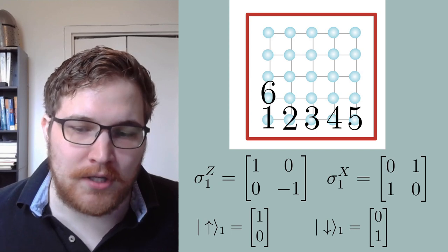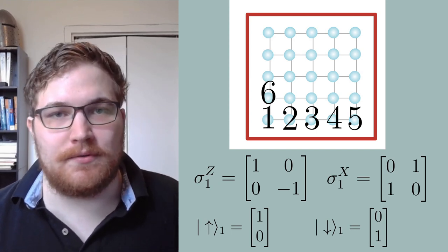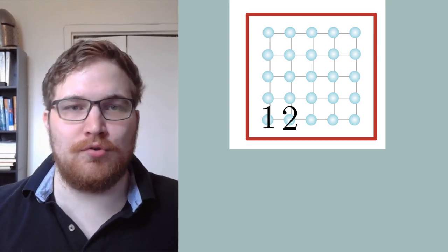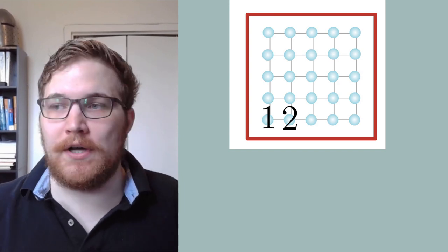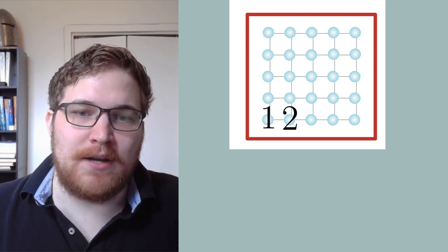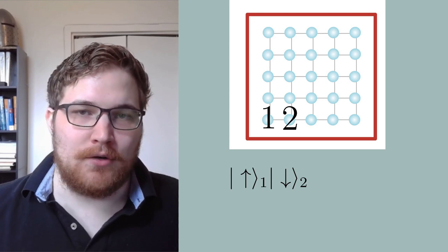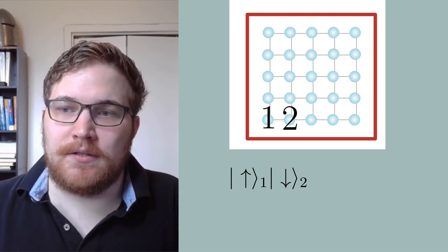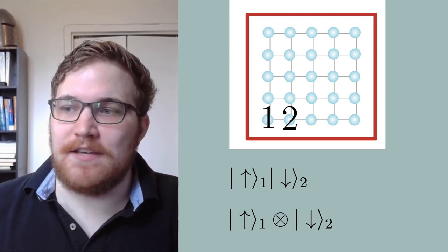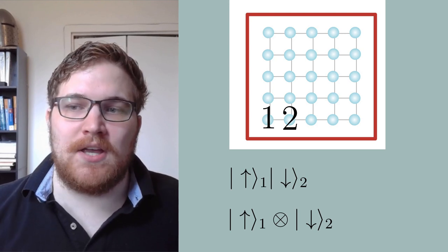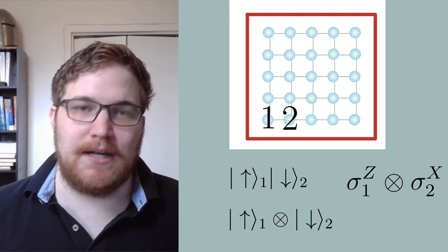This is all very standard in quantum mechanics, and some textbooks open up with these concepts. The interesting question arises when we want to combine our local systems together to describe states on, for example, sites 1 and 2 simultaneously. For example, what if we wanted to represent the state of site 1 being up and site 2 being down as a vector? There is a standard way to do this called the tensor product. We rewrite our state more formally as the following equation. To demystify this tensor product operation, it's worthwhile to write out an example explicitly to show that it's very easy underneath the hood.